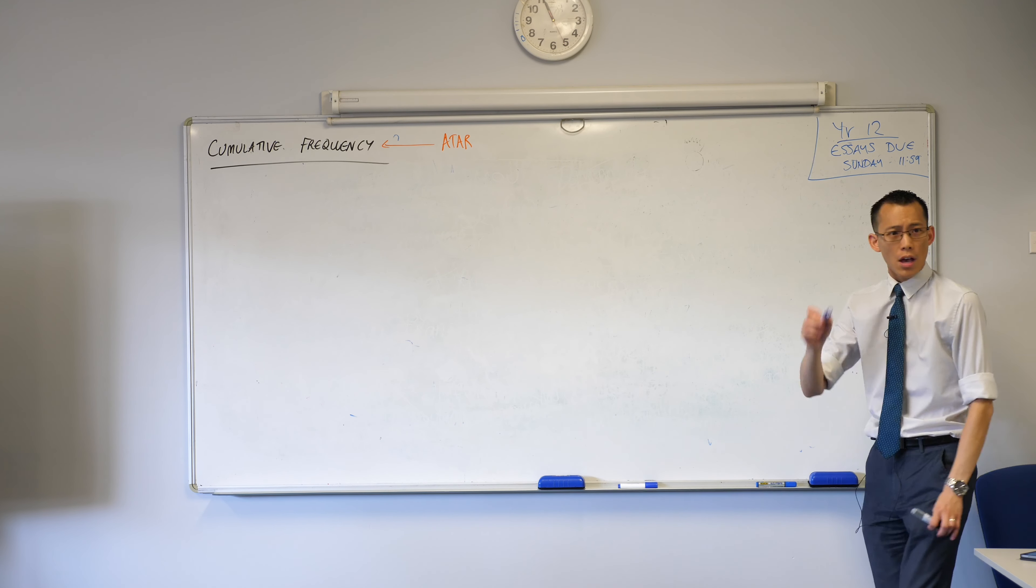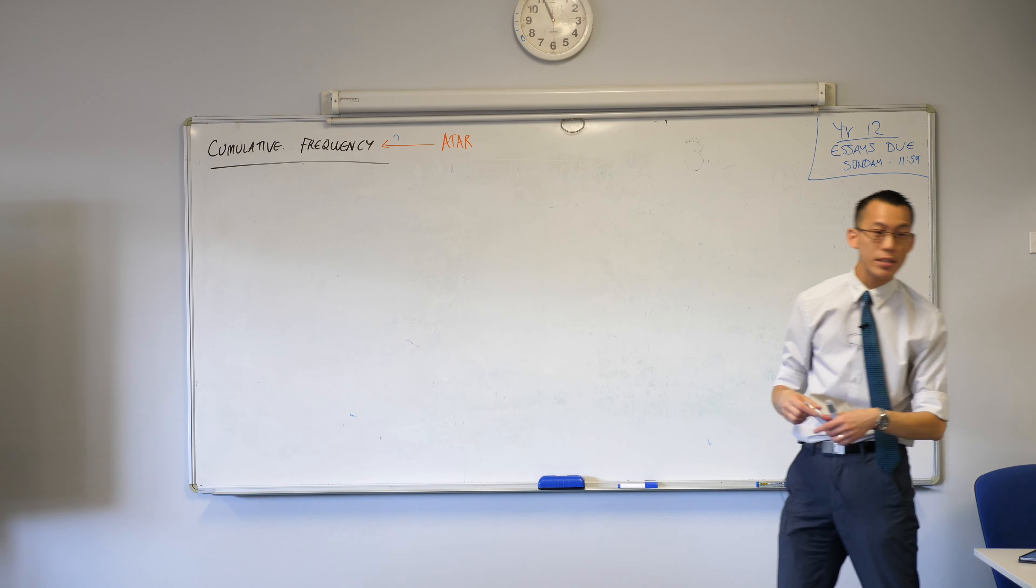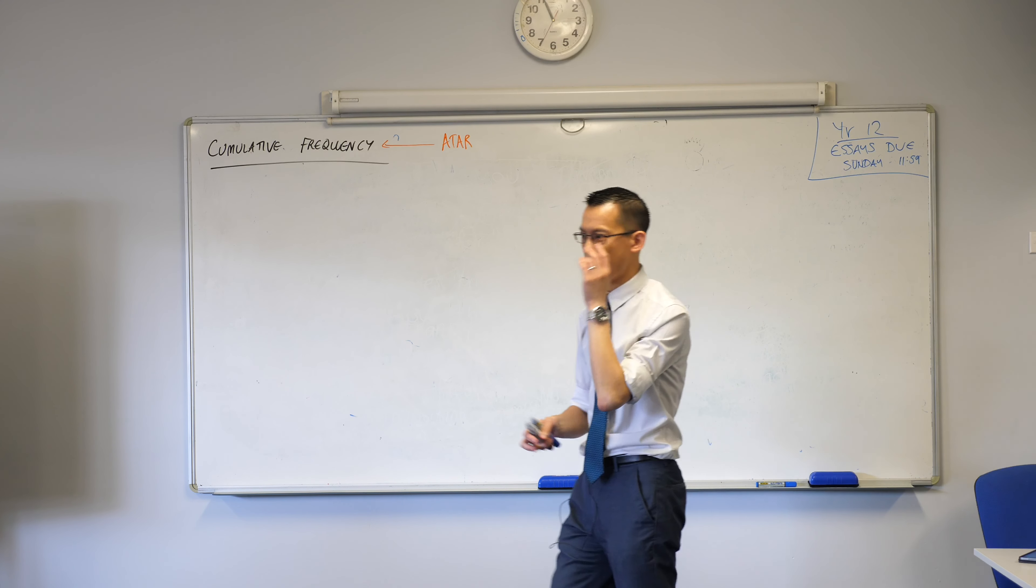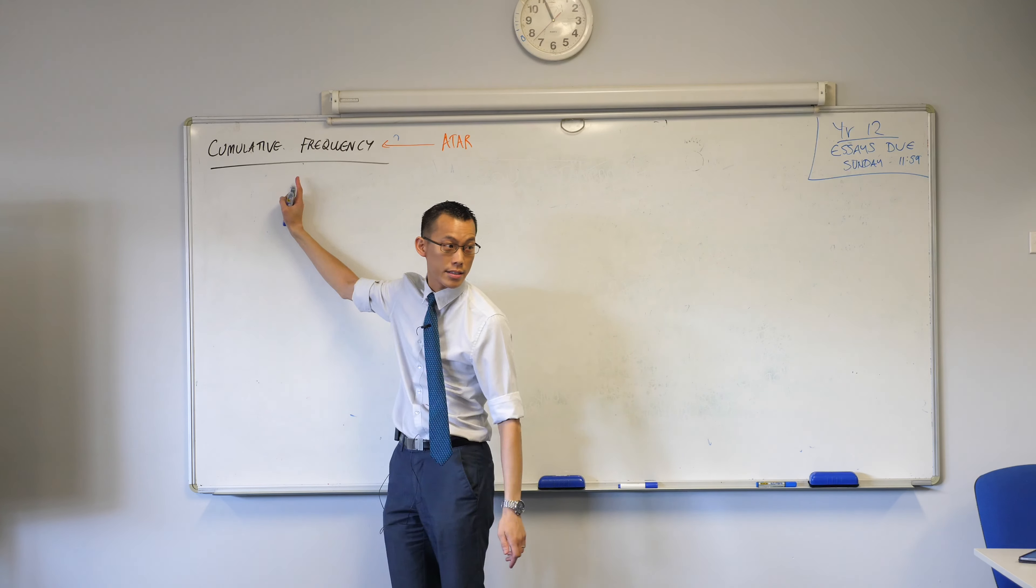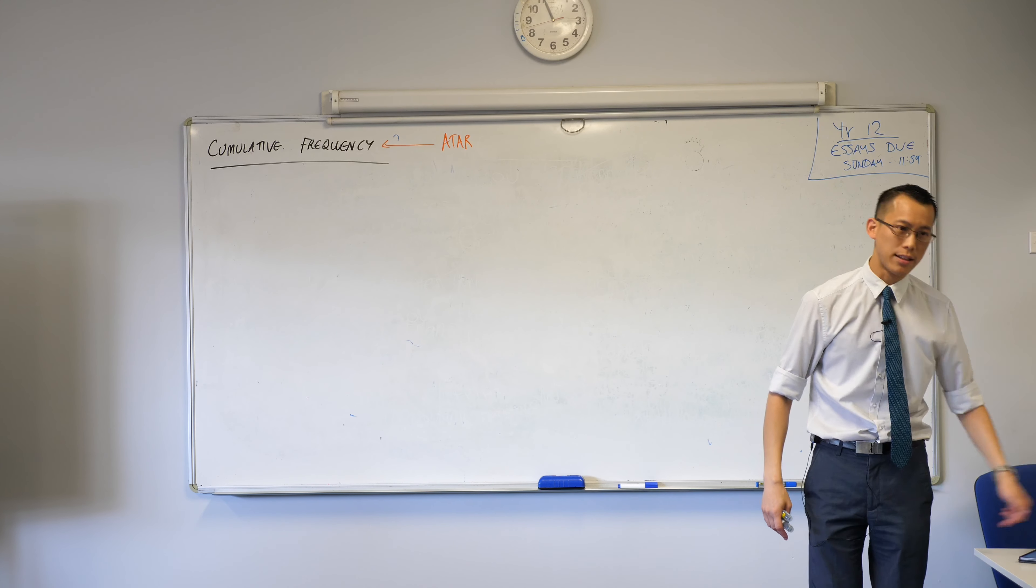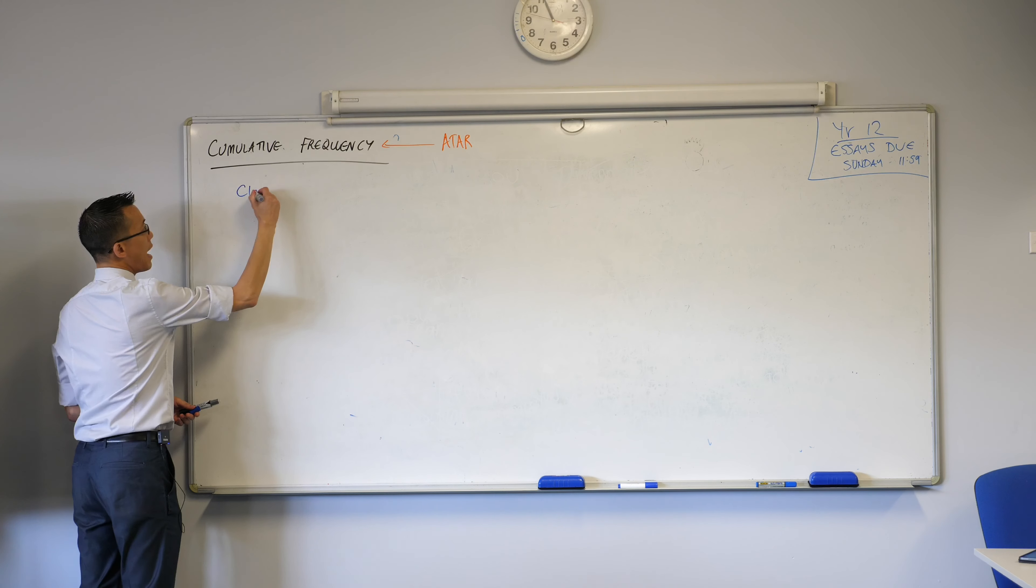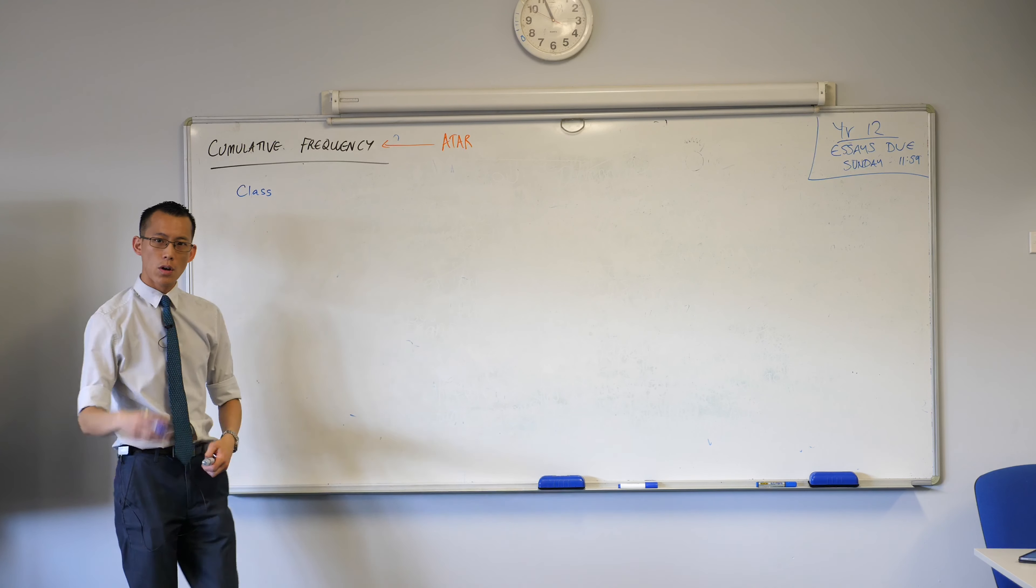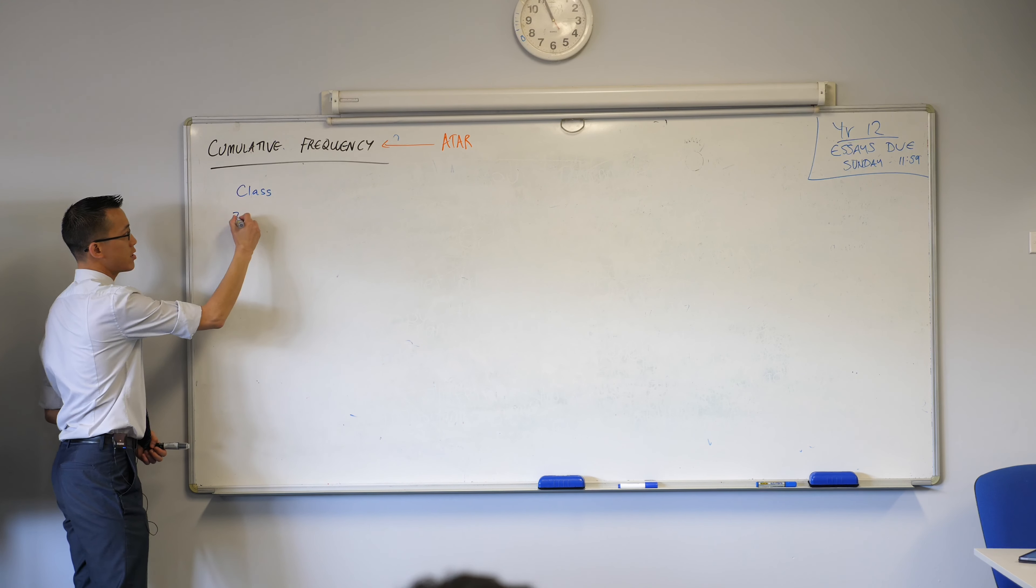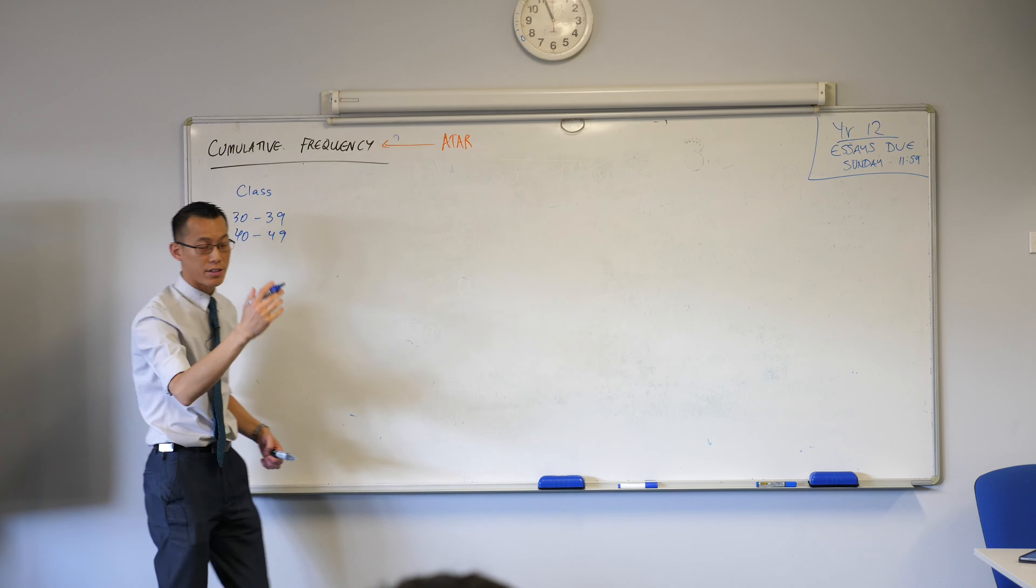We will come back to that pointer later. Let's start with this set of data. The frequency table below shows the marks achieved by a bunch of students on a particular exam. Now the thing I want to focus on is the cumulative frequency which we need to fill in. You've got these classes over there on the left hand side. Why do you think we sometimes gather data into classes? What is the point of having a bracket like 30 to 39, 40 to 49 and so on?